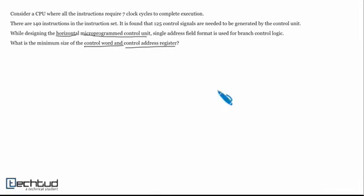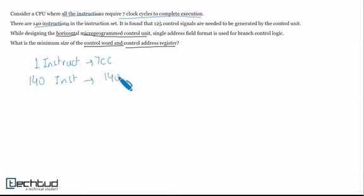Let's come back to our question. In this question several data is given. First of all, all instructions require 7 clock cycles to execute. So it means 1 instruction requires 7 clock cycles. It is given 140 instructions are there in the instruction set. So 140 instructions will require 140 times 7 clock cycles which is 980 clock cycles.